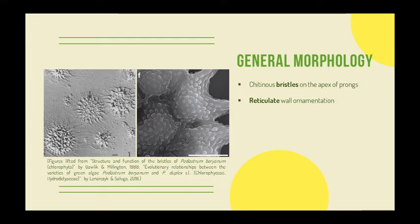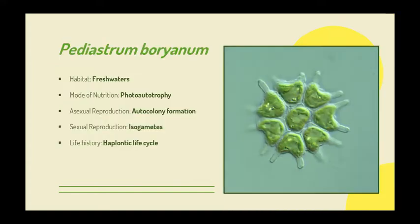Also, a network of ridges covers the cell surface, forming a reticulate wall ornamentation. P. boryanum has cosmopolitan distribution in fresh waters. It is non-motile and floats in the direction of water flow. Just like plants, P. boryanum is a photo-autotroph and therefore a primary producer. P. boryanum may reproduce asexually via autocolony formation or sexually via fusion of isogametes.